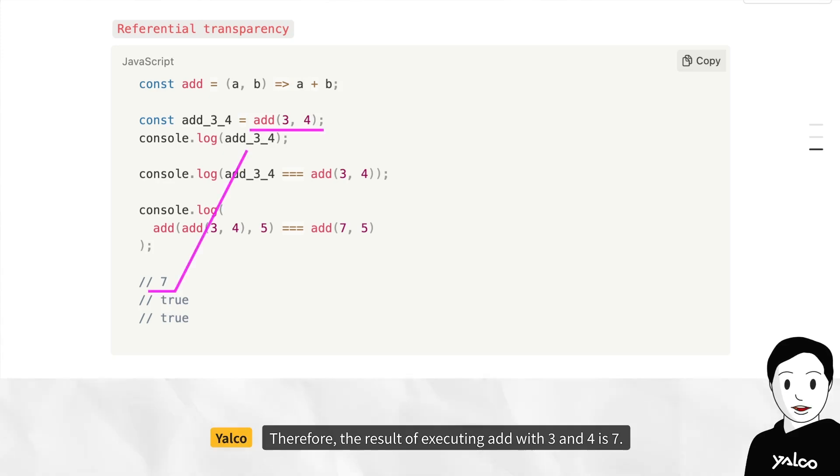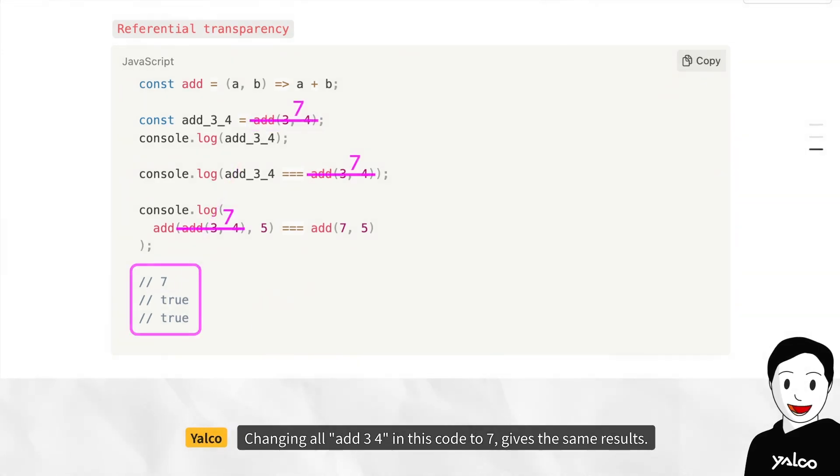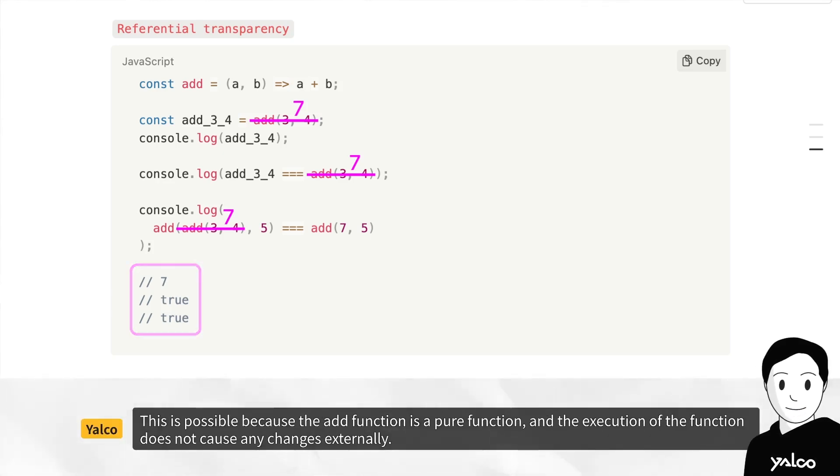Therefore, the result of executing add with 3 and 4 is 7. Changing all add(3, 4) in this code to 7 gives the same results. This is possible because the add function is a pure function, and the execution of the function does not cause any changes externally.